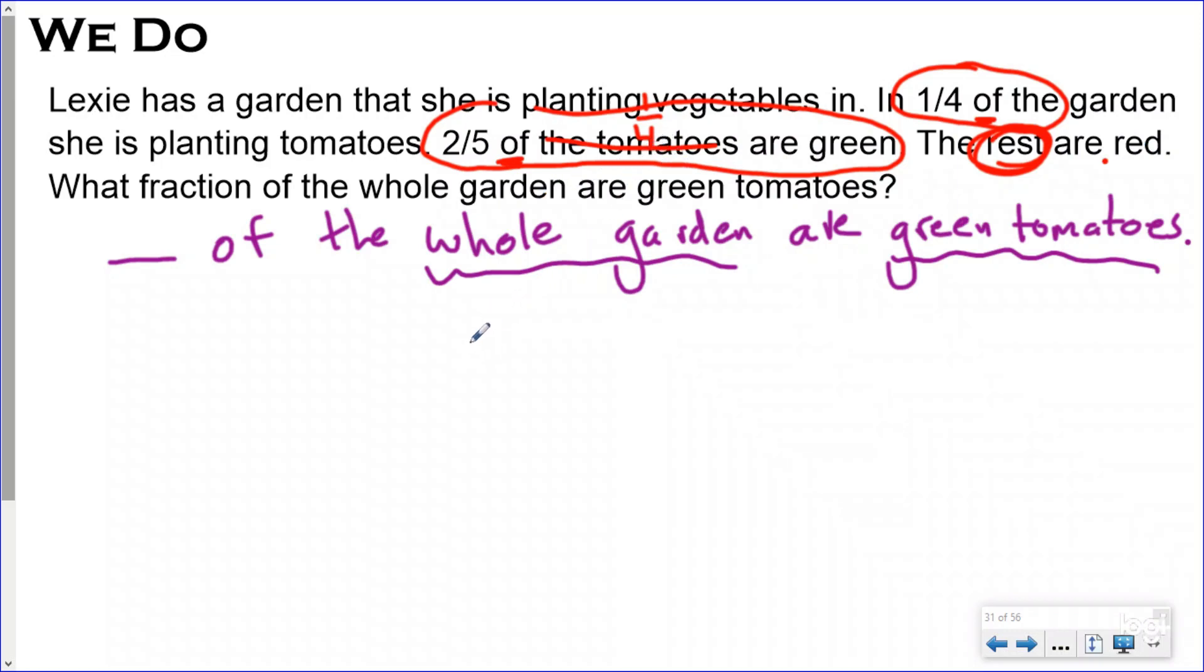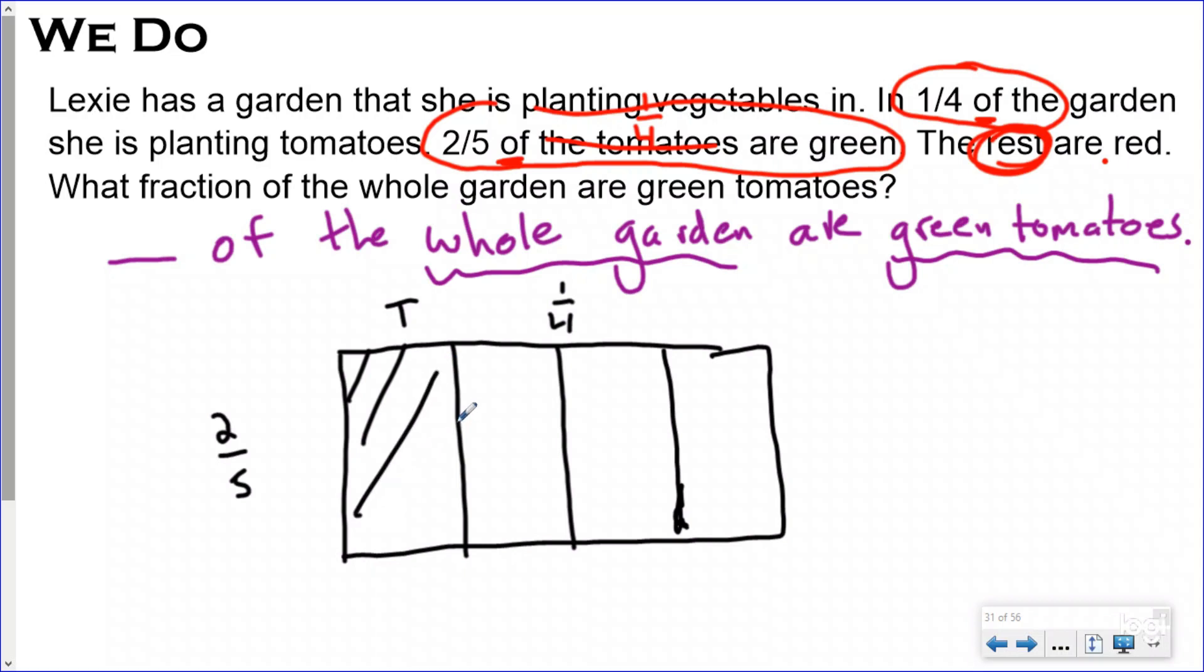So now I develop my plan. I know that I had a garden, and I know that one-fourth of the garden was tomatoes. So I'm going to draw my fraction tape diagram or area model. And I know that I had one-fourth of my entire garden was tomatoes. So I will label this part as tomatoes.